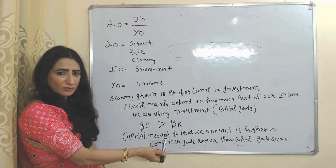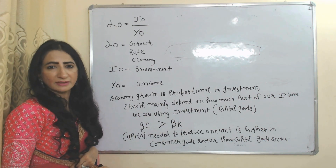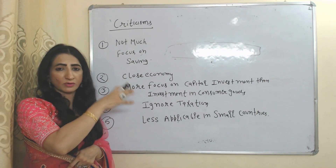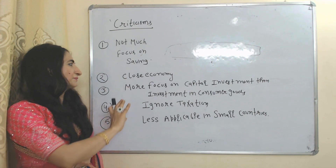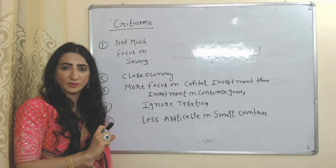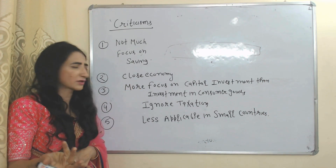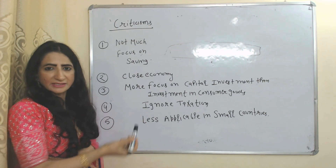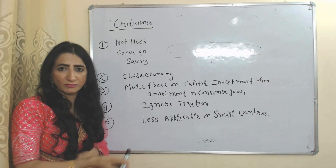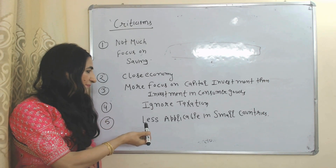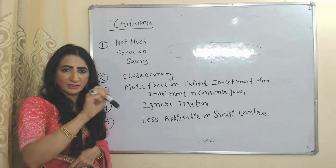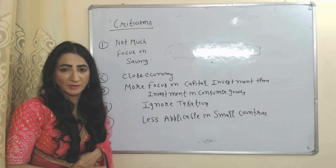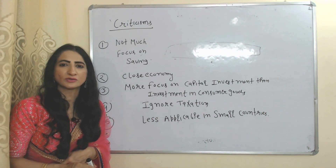Now we'll see the criticisms. Saving is very important for investment, but this model does not focus much on saving — only on investment. Regarding the closed economy assumption: international trade is very important for economic growth, but this model assumes a closed economy. The model also focuses more on capital investment than on consumer goods investment, and it ignores taxation, which is an important source of government revenue. Finally, the model is less applicable in small countries, because it is based on investment in heavy industries, and small countries do not have sufficient funds for such investment.